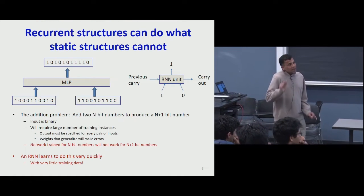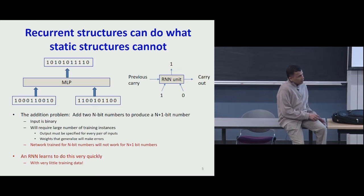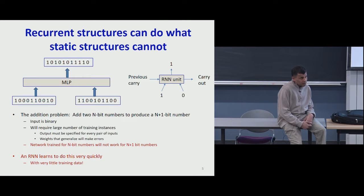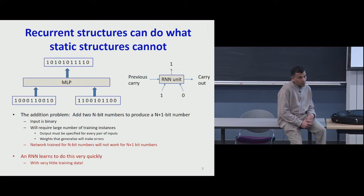We also saw that it wasn't just time series problems where recurrent neural networks could be useful. Even in other problems, like trying to develop a network to learn to add two binary numbers, the recurrent structure could be much smaller than a flat structure. If you were trying to train a network that took in two 10-bit numbers to output an 11-bit number, the network would have to be very large to capture all input patterns — all possible two raised to 20 combinations of input.